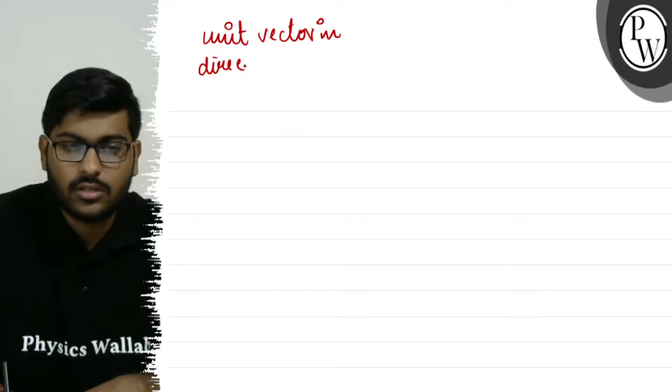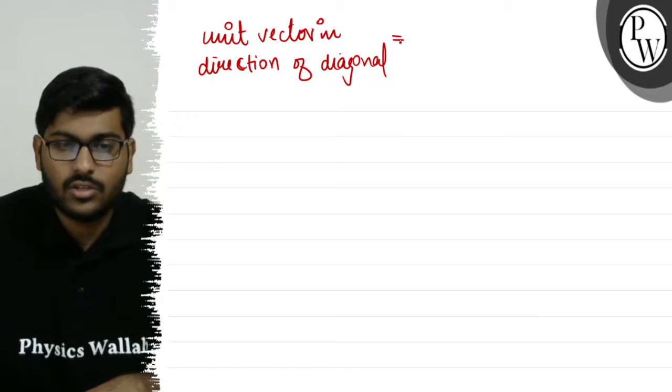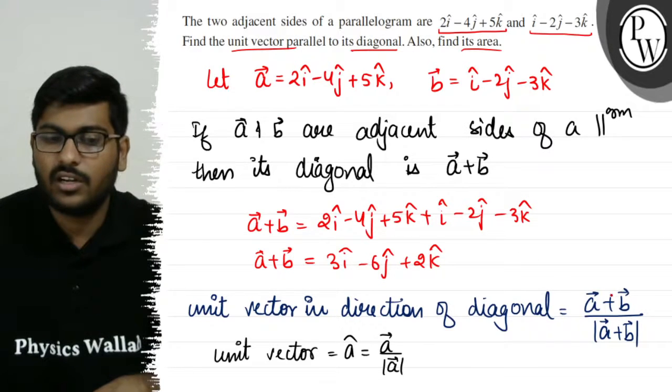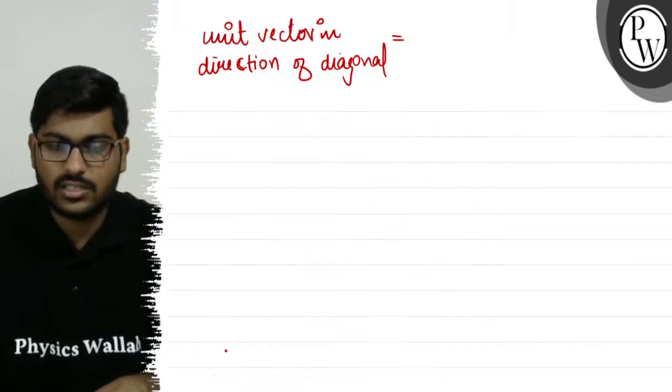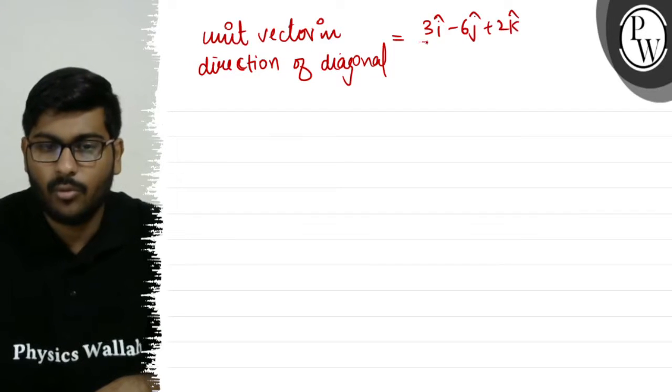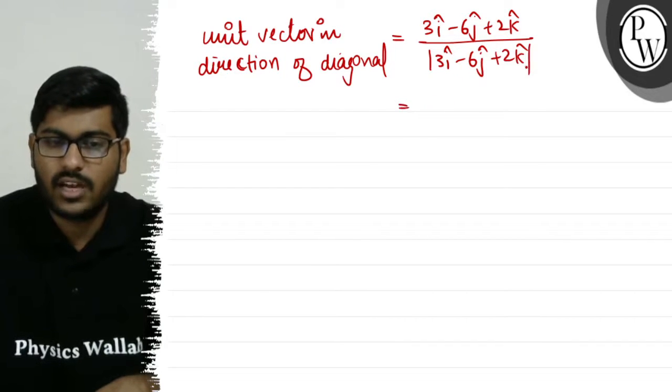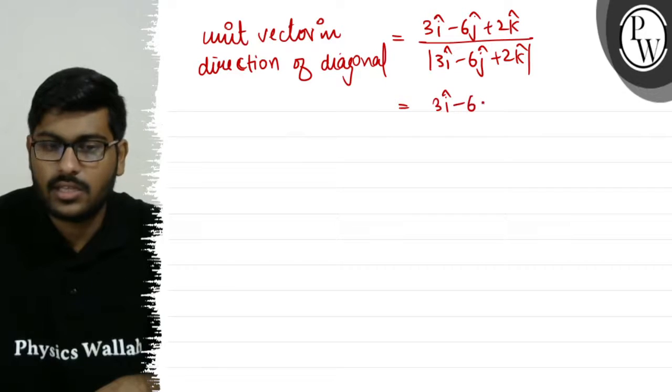Unit vector in direction of diagonal is equal to A vector plus B vector over its magnitude. This is 3i-cap minus 6j-cap plus 2k-cap divided by the magnitude of 3i-cap minus 6j-cap plus 2k-cap.